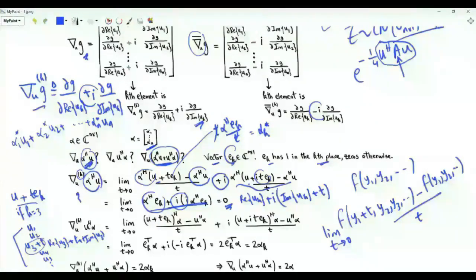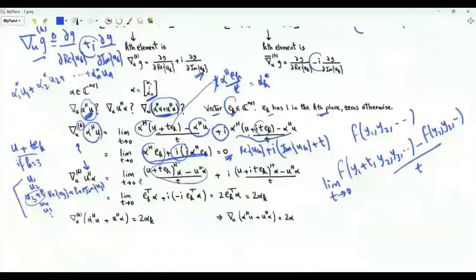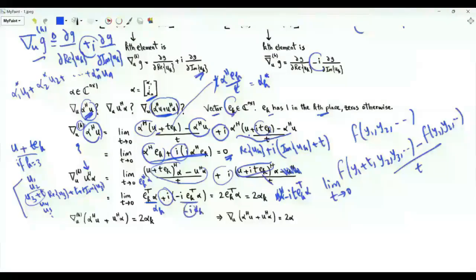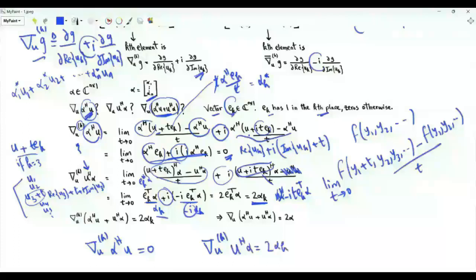Applying this operator to alpha Hermitian u results in zero. If we rather apply this operator to u Hermitian alpha, we get 2 alpha_k. Applying the operator to the sum alpha Hermitian u plus u Hermitian alpha, we get 2 alpha_k.